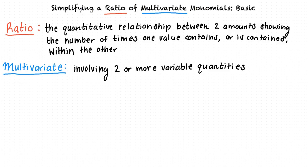Multivariate means involving two or more variable quantities. For example, 5xy is a multivariate expression because it has two different variables, x and y, whereas 5x would just be a univariate expression because it only contains one variable, x.